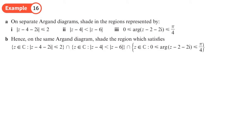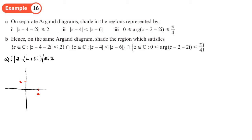On separate Argand diagrams, shade the regions for each inequality. Start with part A: |z - (4 + 2i)| ≤ 2. This is a circle with centre at (4, 2) and radius 2. It goes down to (4, 0), up to (4, 4), across to (2, 2), and across to (6, 2). Since it says less-than-or-equal-to 2, the boundary is a solid line and you shade inside the circle.